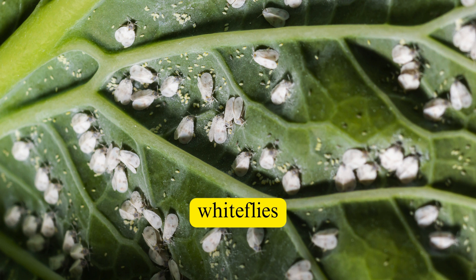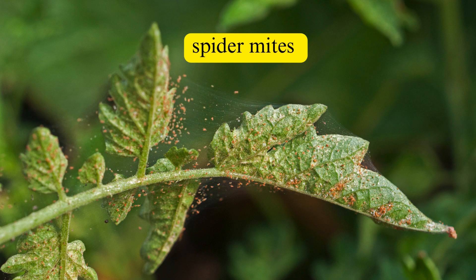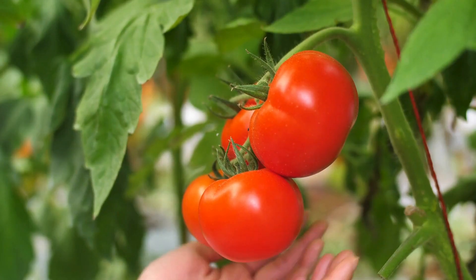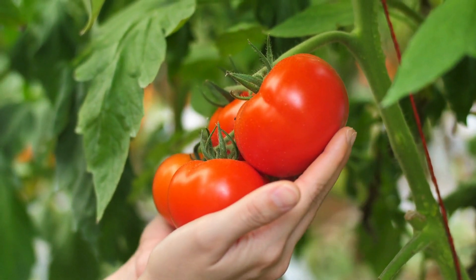Resistant insects often show susceptibility to Spiro-Tetramat. Its mode of action targets lipid biosynthesis and molting, offering effective control while minimizing environmental impact.